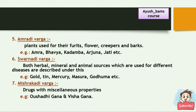Suvarnadi Varga: Both herbal, mineral, and animal sources used for different diseases are described here — for example, Gold, Tin, Mercury, Masura, Goduma, etc. The last Varga, Mishrakadi Varga, describes drugs with miscellaneous properties — for example, Aushadi Gana and Vishya Gana.